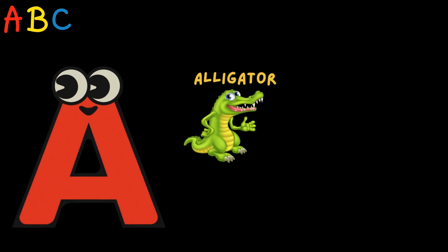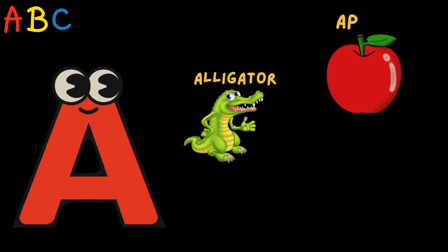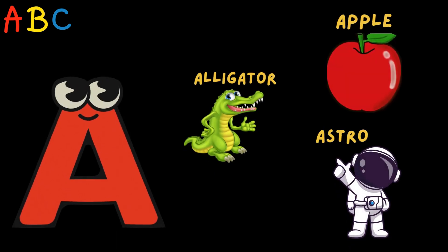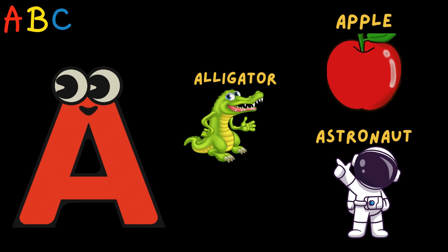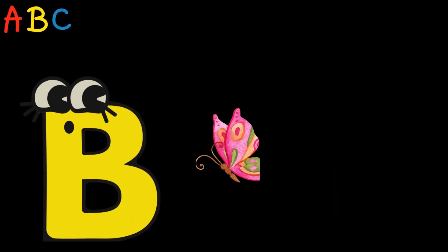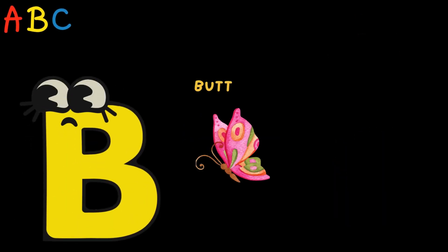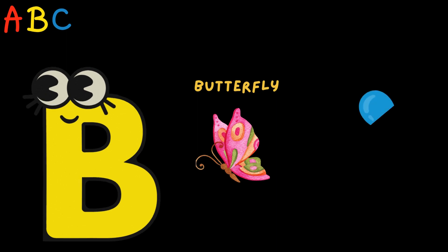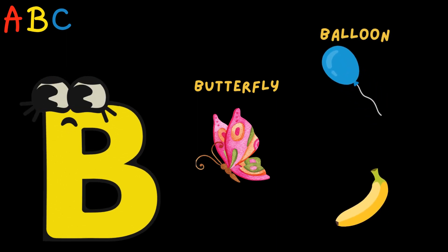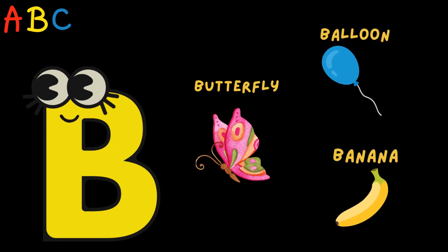A is for Alligator, Apple, Astronaut. B is for Butterfly, Balloon, Banana.